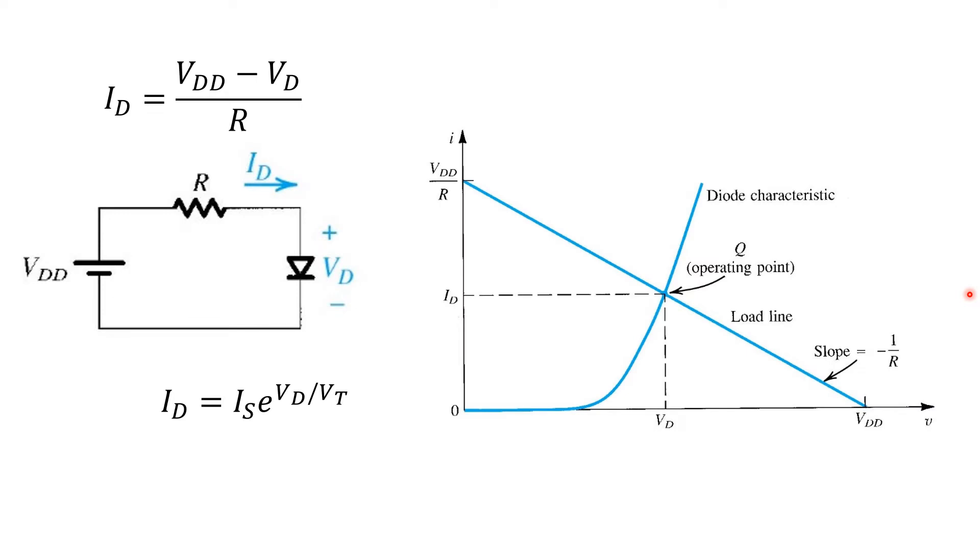So one way to solve it is graphically. We can simply plot the VI characteristic of each of these equations on the same axis. The relationship that governs the voltage and current through the resistor R is represented by the straight line here, often called the load line. The exponential relationship of the diode, on the other hand, is plotted here. The intersection between them is the only place where the values of current and voltage simultaneously satisfy both equations, so that must be the operating point of the actual circuit.